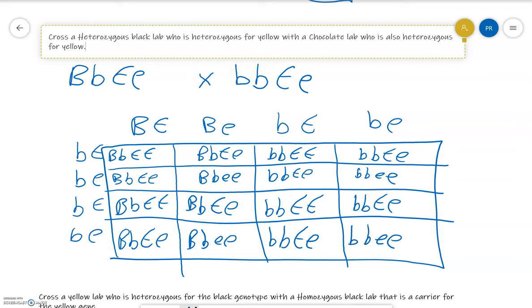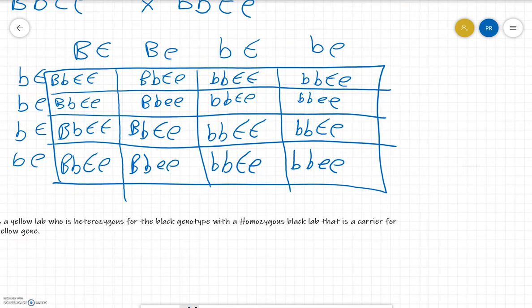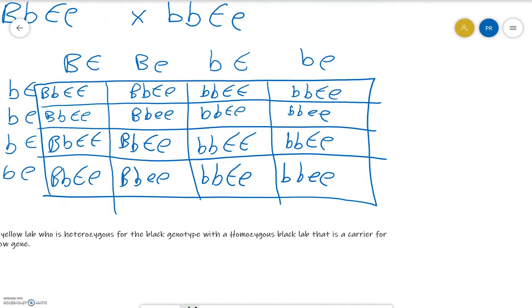There's our genotypes. Let me quickly skim through this because I sometimes make mistakes. It looks pretty good. Let's take a look at our phenotypes here. Let me highlight all the ones that'll be yellow. All the ones that'll be yellow will be homozygous recessive ee for that E genotype. These are the ones that are yellow. The chance of having a yellow lab is four out of 16, which is the same thing as saying one out of four, or 25% chance of having a yellow lab.